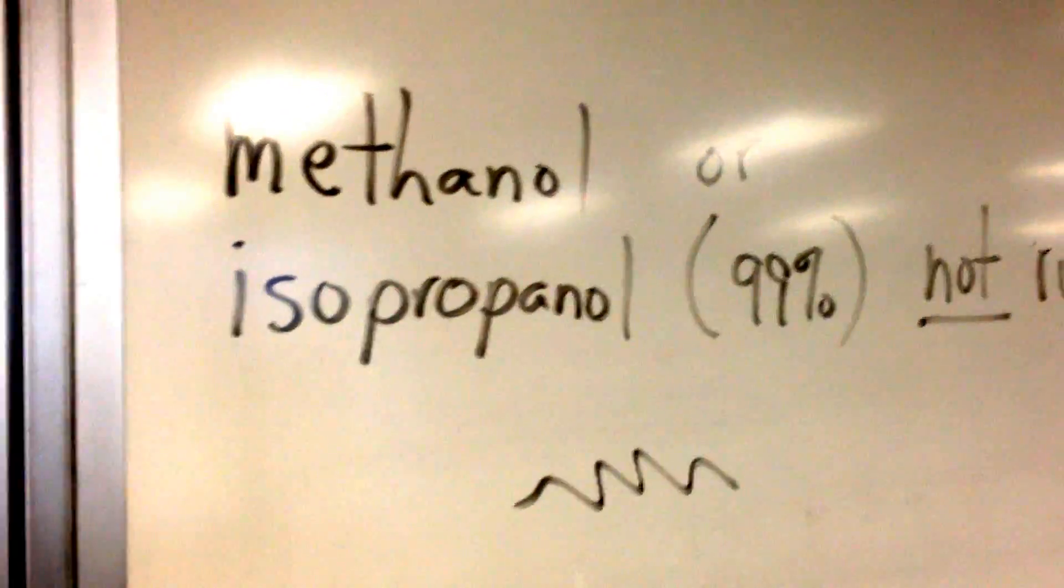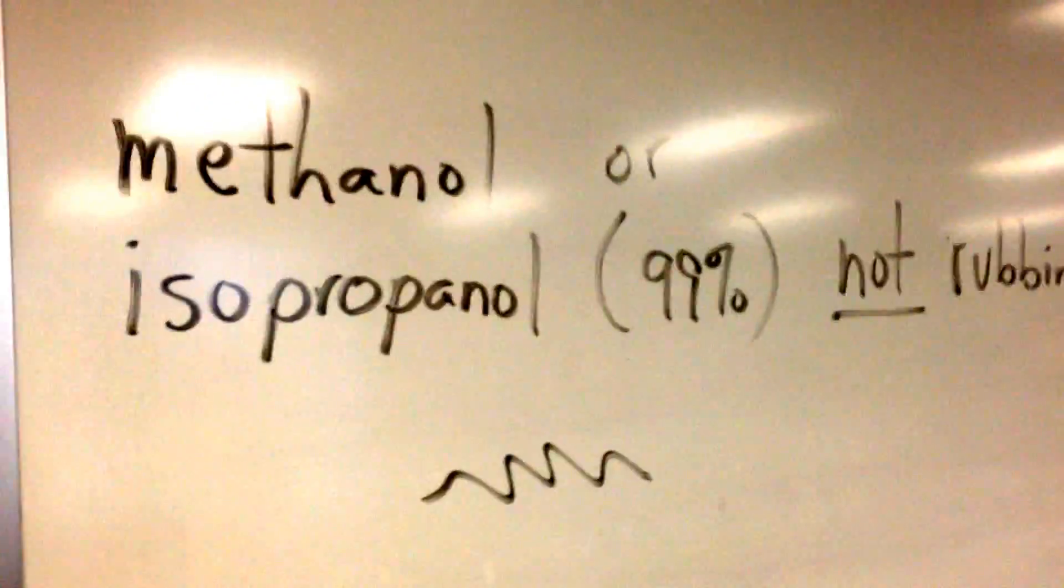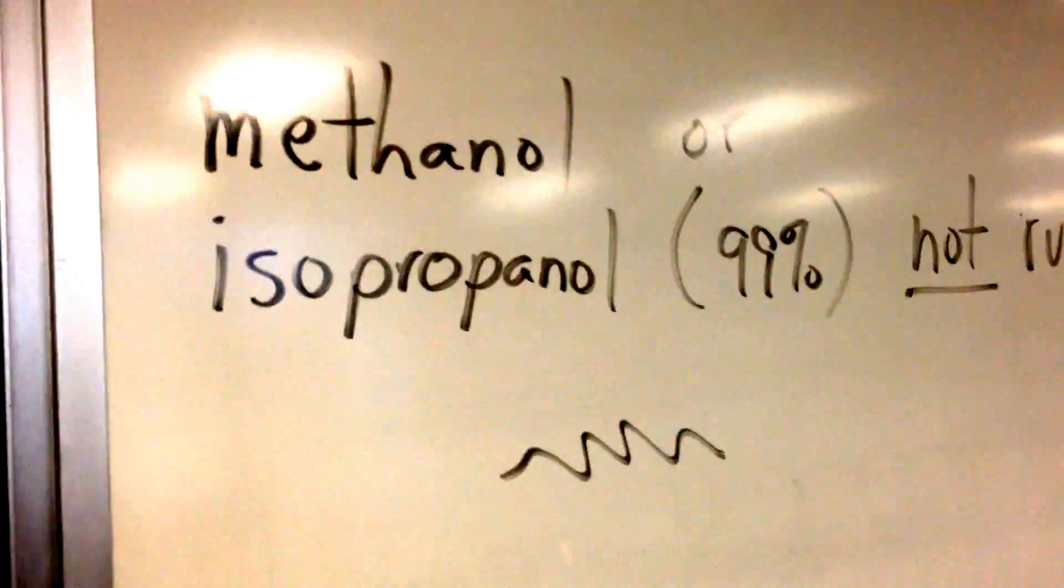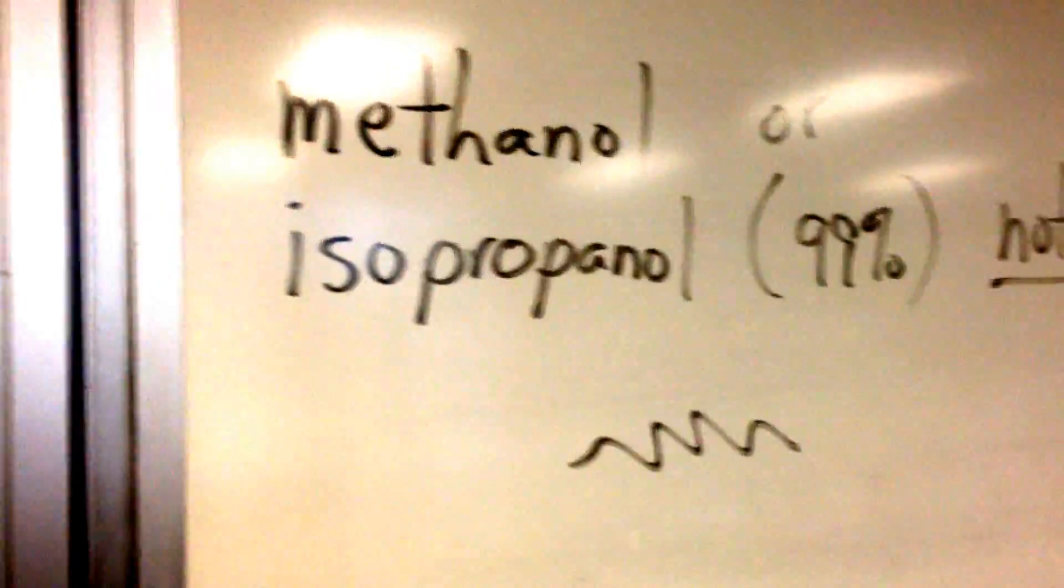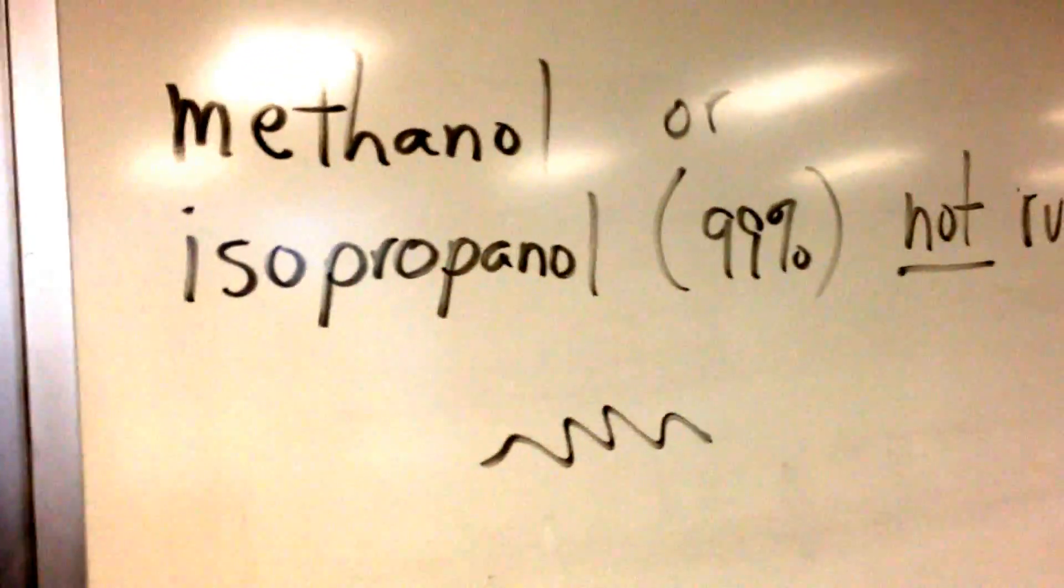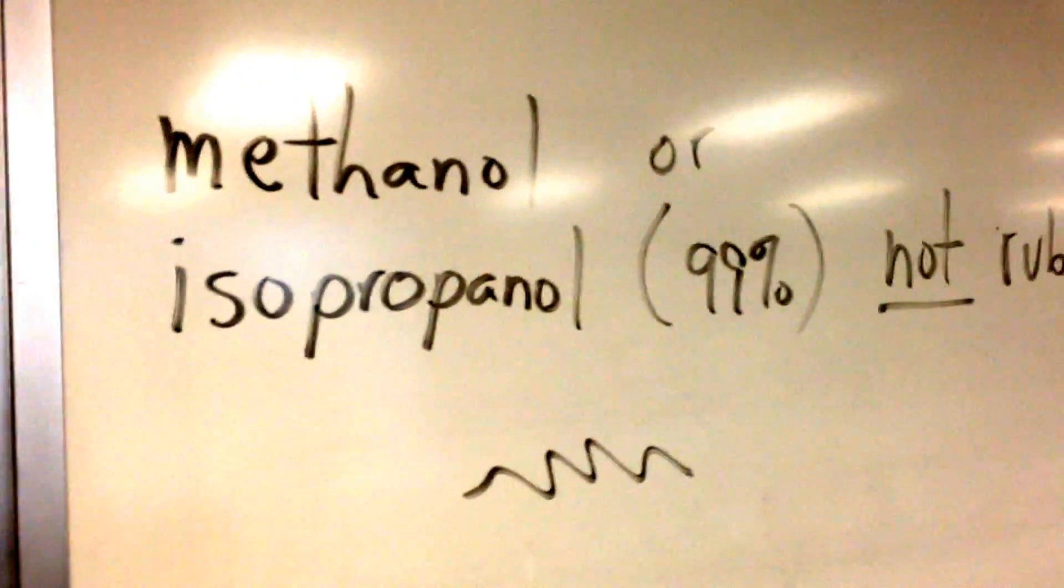you can use methanol or isopropanol, 99%, which you can buy at any pharmacy. Do not use rubbing alcohol, which is 70% isopropyl alcohol or also known as isopropanol. If you use the 70%, you'll kill the marker completely. It won't work at all.